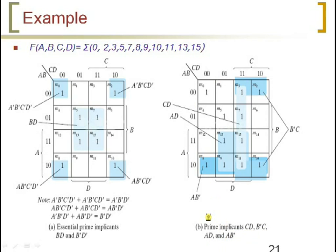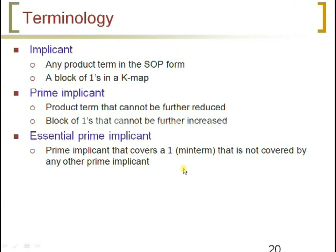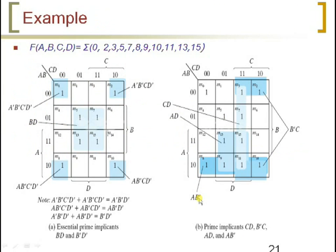A prime implicant is a product term that cannot be further reduced — the maximum-sized grouping. CD is nothing but this term, and the maximum size would be 4 — we cannot increase the grouping to 8. B-bar C is this group, and AD is this group of size 4 — we cannot increase it to 8. AB-bar is this group of size 4. These implicants are called prime implicants.